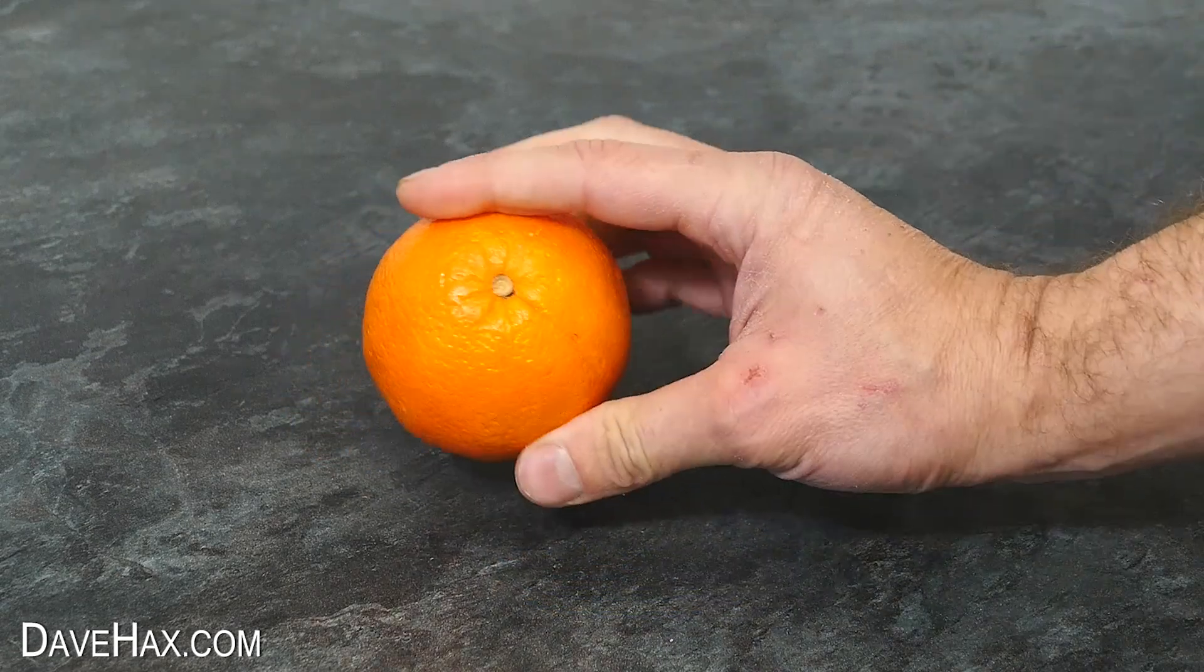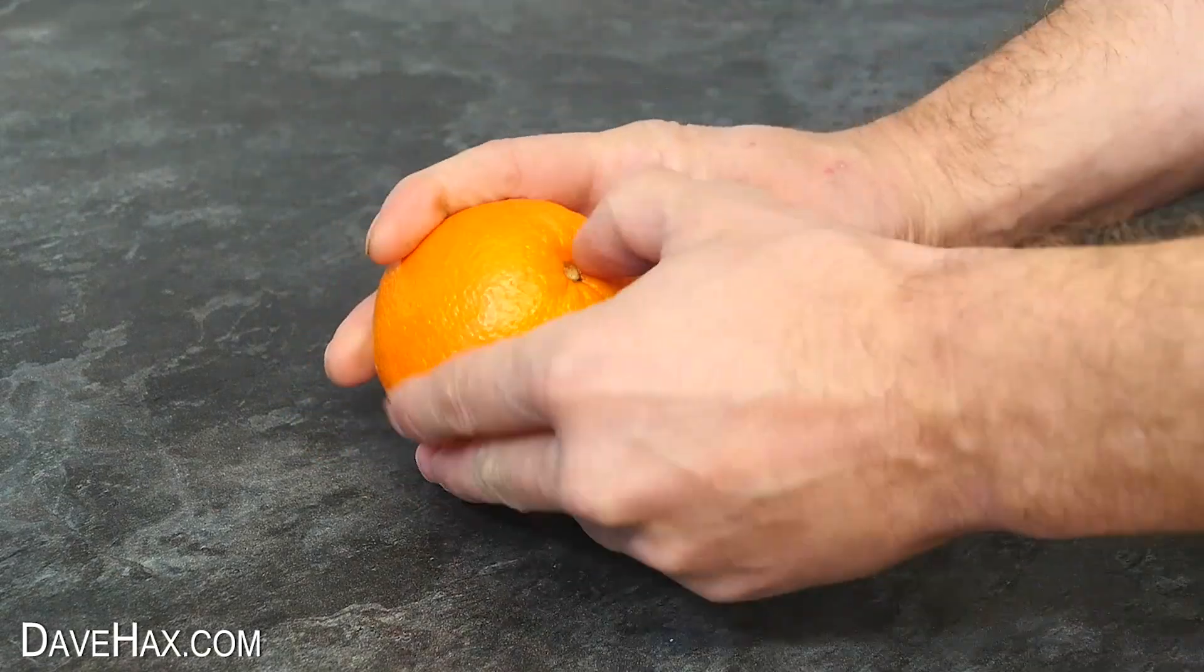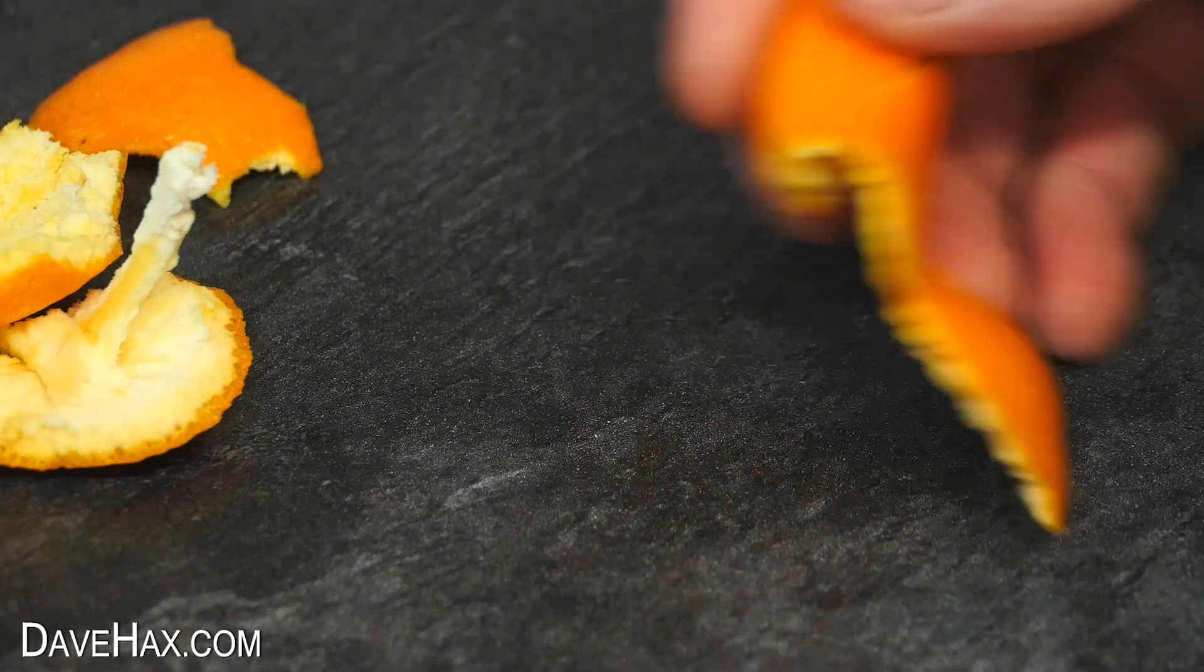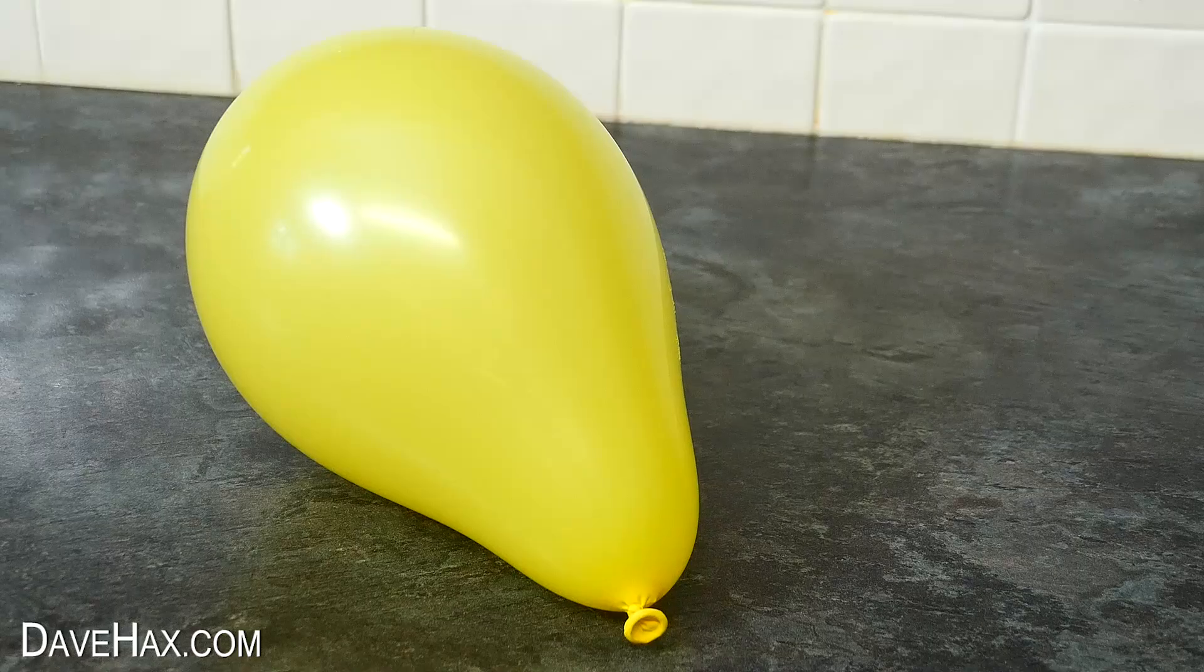And for the final experiment we're going to start by peeling an orange. And it's not for the fruit we're after. We're actually after the peel. And if you pinch it like this, you spray out a small amount of fluid called limonene. And if we spray this liquid onto a balloon, it weakens the surface and causes it to pop.